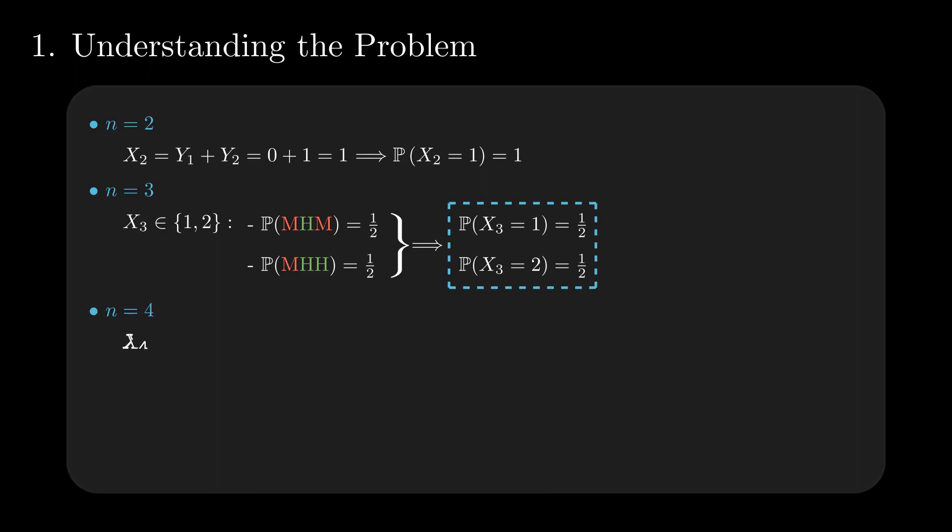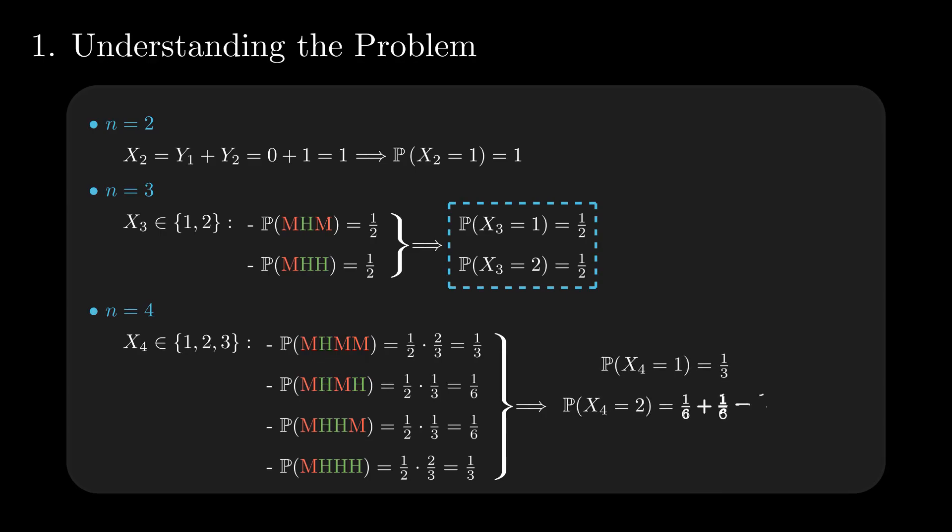In the case of four tries, there are four possible combinations of tosses with probabilities as seen. They aggregate into three values for the number of hits: 1, 2, and 3, all equally likely.